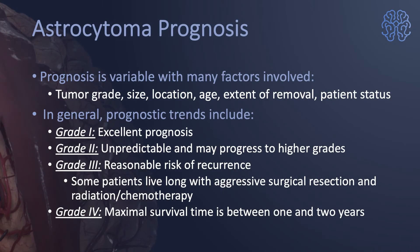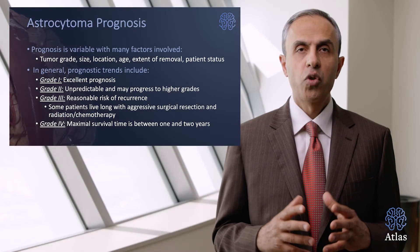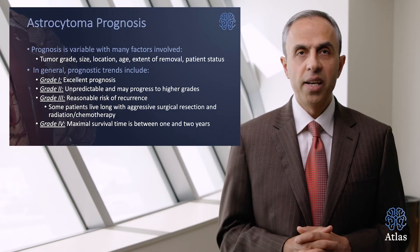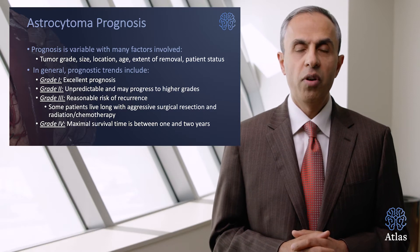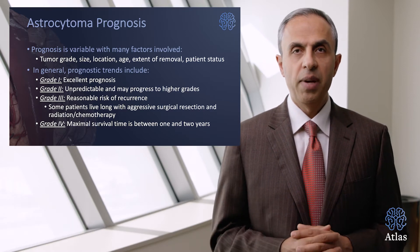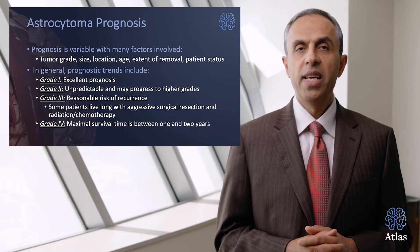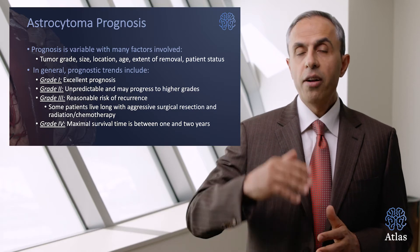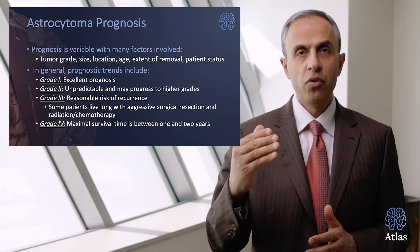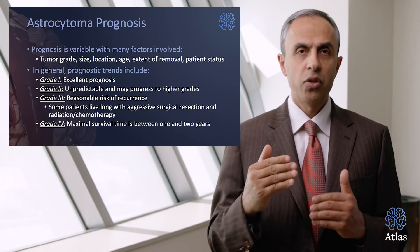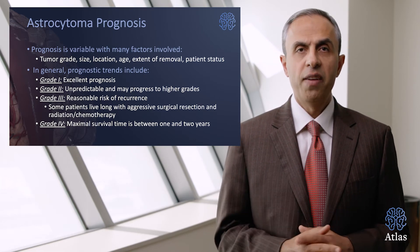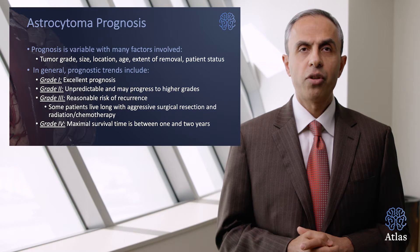What is the prognosis for these tumors? The tumor grade, size, location, age of the patient, extent of removal, and the patient's neurological status are the most important factors defining prognosis and lifespan. The tumor type is very important: the higher the grade and the more cancerous the tumor, unfortunately, the shorter the lifespan and the greater the neurological decline.